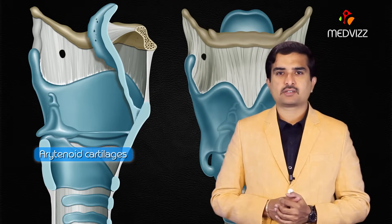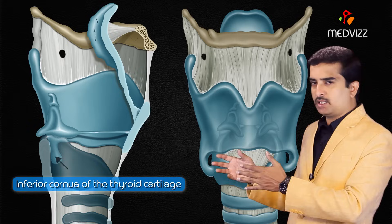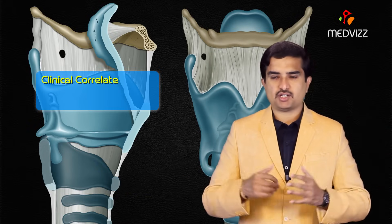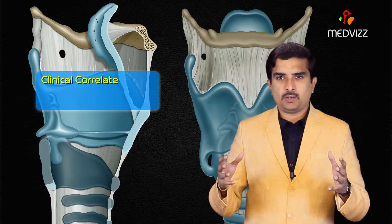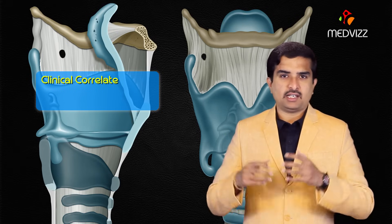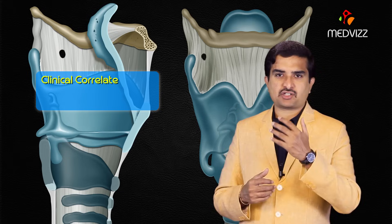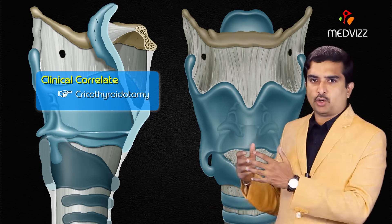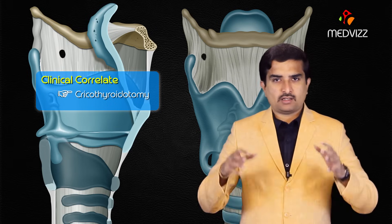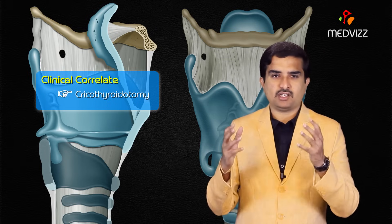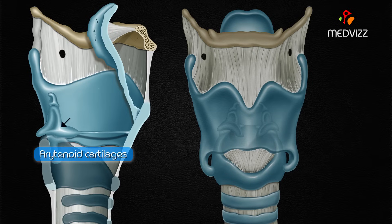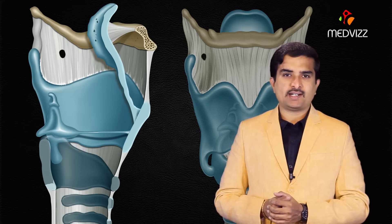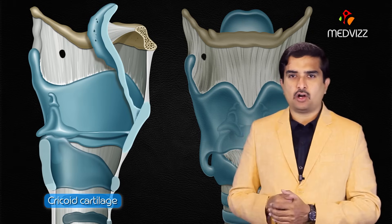The cricoid lamina articulates superiorly with the arytenoid cartilages and the inferior cornua of the thyroid cartilage. As a clinical correlate, in an emergency where an airway cannot be established by endotracheal intubation, a cricothyroidotomy can be performed by incising the cricothyroid membrane.